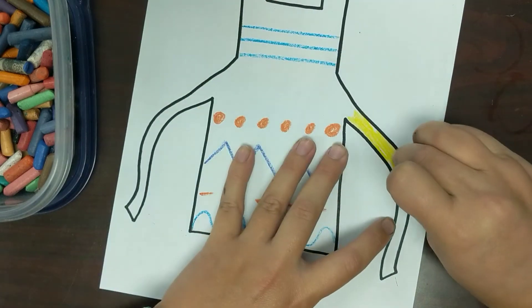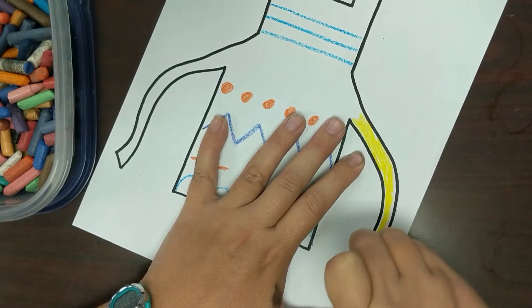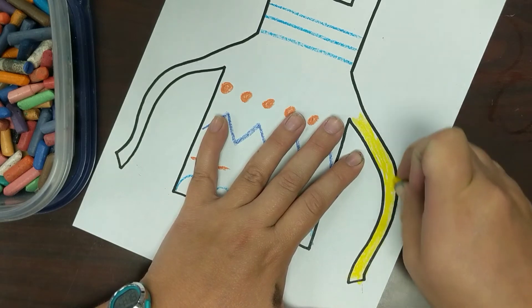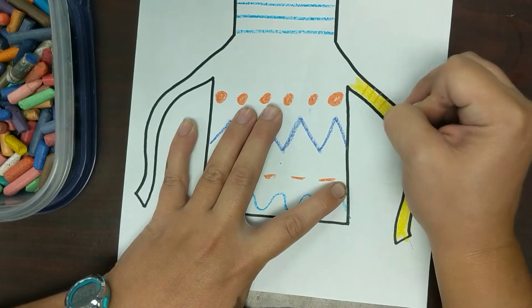And again, make sure you're coloring all the way so that there's no white space showing. It's okay if you go outside the black lines because we're going to be cutting these out next time. And then I'm going to do some stripes in there. Look, I got some more straight lines.